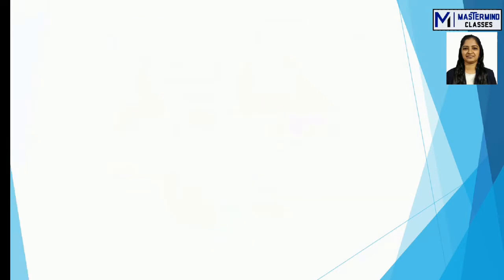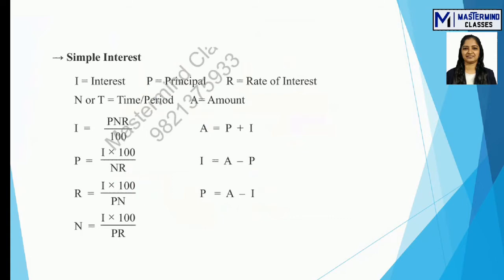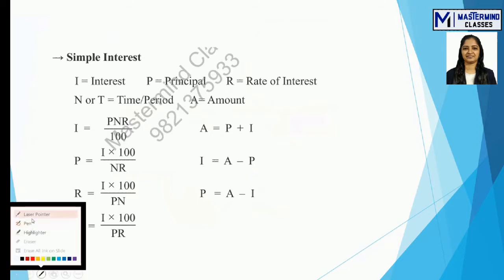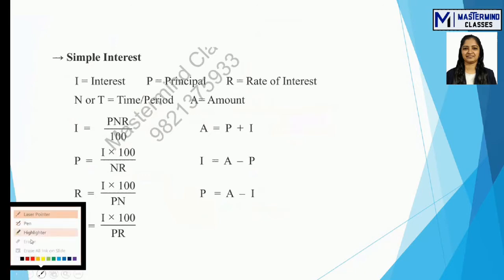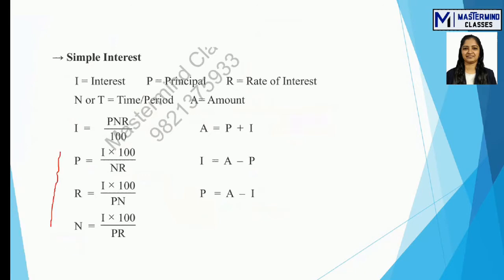Let's start with the basic formulas. You should know the main formulas of simple interest. There are two main formulas, the first being Simple Interest = PNR / 100. From this main formula, we derive three more formulas. Let's see how they work.